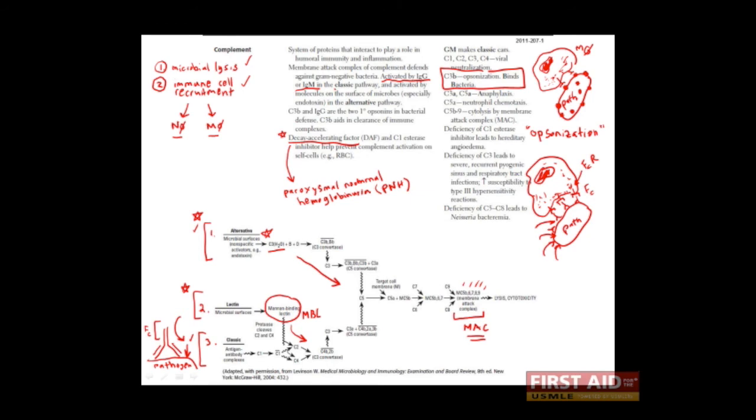Okay, so that was C3B. Let's also talk about C3A and C5A. Again, C3A and C5A are other products of the complement cascade. And even though this figure down here is kind of small, take a look in your book and you'll be able to find them. Here's C3A. C3A is also here. Here's C5A.